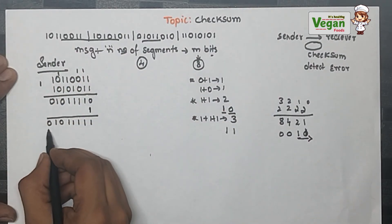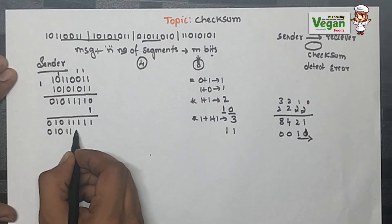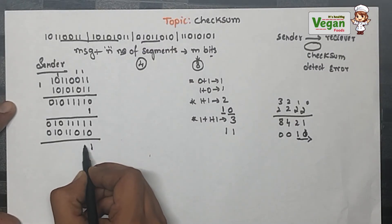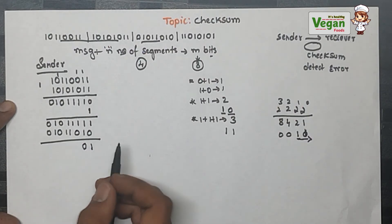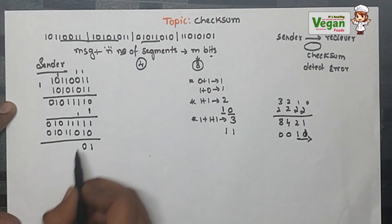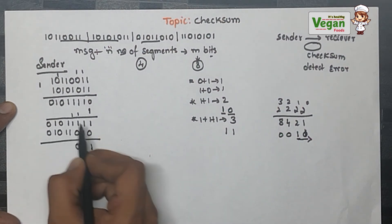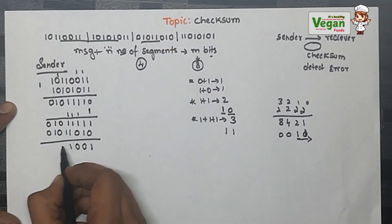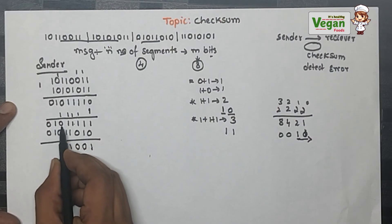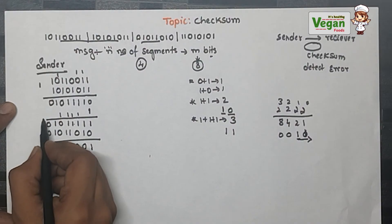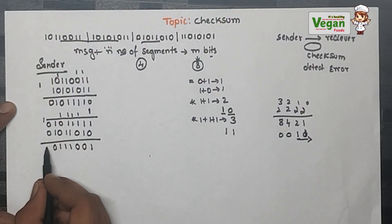Now let's go with the third frame: 0, 1, 0, 1, 1, 0, 1, 0. Adding: 1+0=1. Then 1+1=2, so sum=0, carry=1. Then 1+1=2, sum=0, carry=1. Then 1+1+1=3, sum=1, carry=1. Then 1+1+1=3, sum=1, carry=1. Then 1+0+0=1. Then 1+1=2, sum=0, carry=1. Then 1+0+0=1.